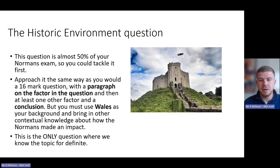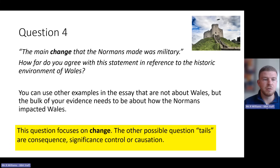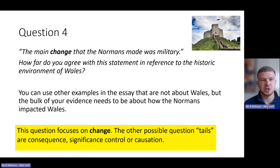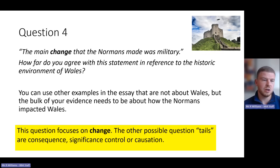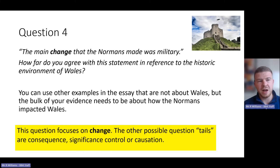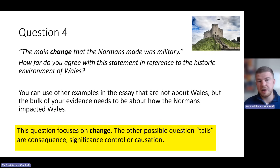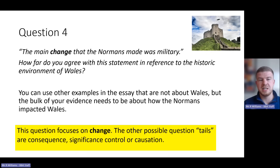Here's an example of what the question might look like: 'The main change that the Normans made was military — how far do you agree with this statement in reference to the historic environment of Wales?' This uses what we call the question type of 'change,' but it could also ask about consequences, significance, causes, or cause and consequence. If you have a complete mind blank you can use other examples, but the bulk of your evidence needs to be about how the Normans impacted Wales.